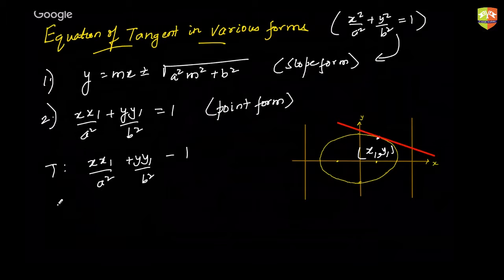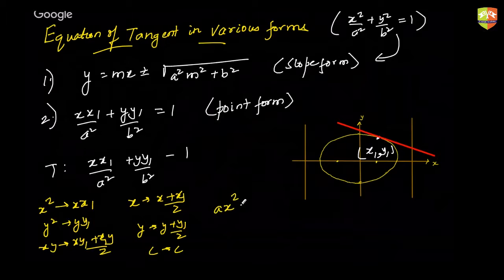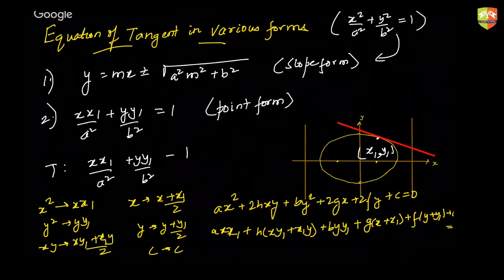There is a generalization going on here: we substitute x² with xx₁, y² with yy₁, xy with (xy₁ + x₁y)/2, x with (x + x₁)/2, y with (y + y₁)/2, and c remains c. So even if the equation of the ellipse is in general form, the tangent at point (x₁, y₁) is found by these substitutions.